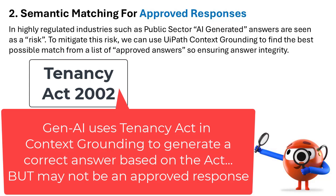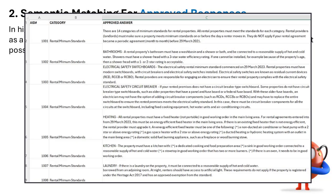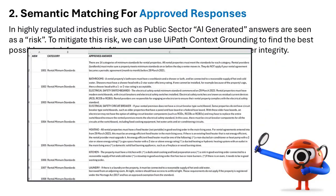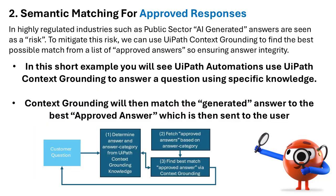In this example, we've loaded the Tenancy Act of 2002 into context grounding so it can find answers. However, we also provide a list of approved answers. So now context grounding will generate an answer based on the Tenancy Act, but will provide the user with an answer that is only taken from the approved answer picklist.